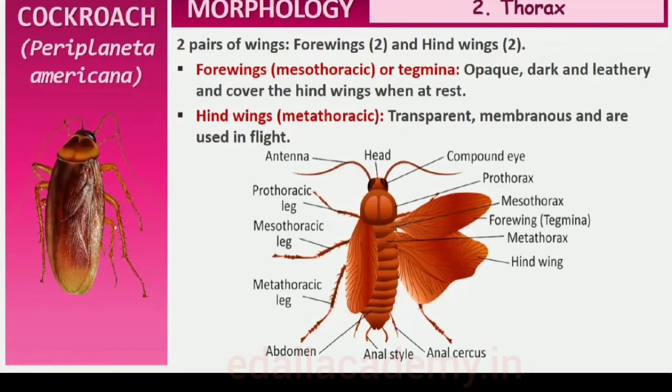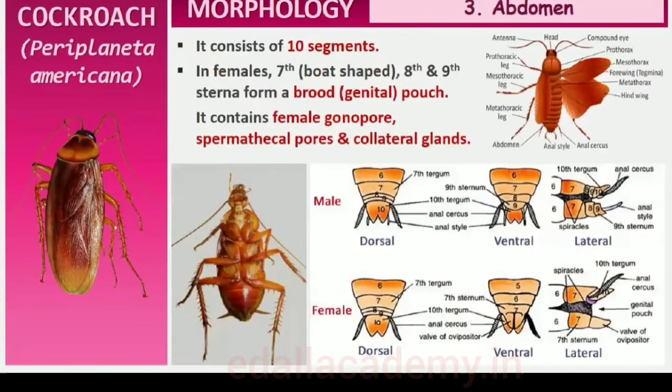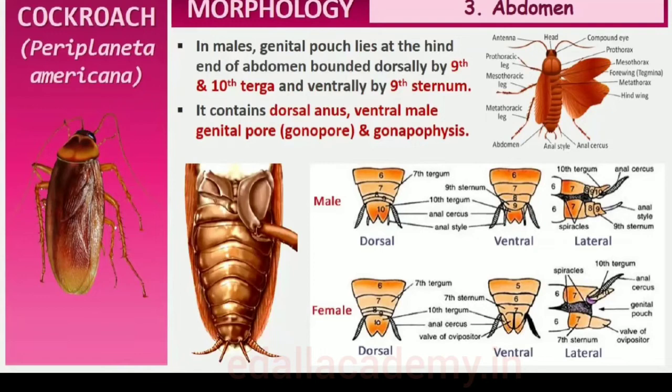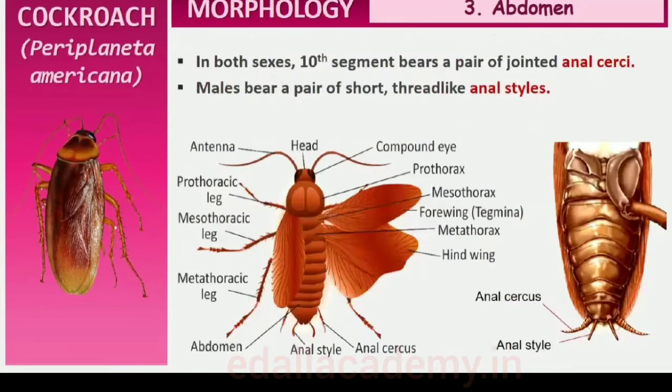The abdomen in both males and females consists of ten segments. In females, the 7th sternum is boat-shaped and together with the 8th and 9th sternites forms a brood or genital pouch whose anterior part contains the female gonopore, spermathecal pores and collateral glands. In males, the genital pouch lies at the hind end of the abdomen bounded dorsally by the 9th and 10th terga and ventrally by the 9th sternum. It contains the dorsal anus, ventral male genital pore and gonapophyses. Males bear a pair of short thread-like anal styles which are absent in females. In both sexes, the 10th segment bears a pair of jointed filamentous structures called anal cerci.